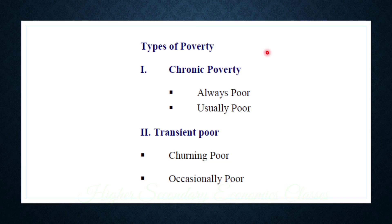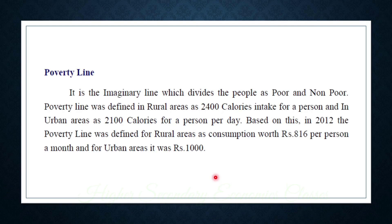You can see the types of poverty. The types of poverty include chronic poverty. Poverty is usually chronic poverty. The poverty line has a different definition.